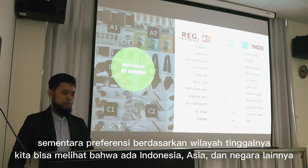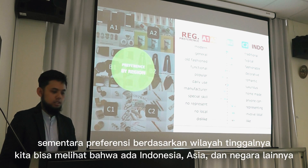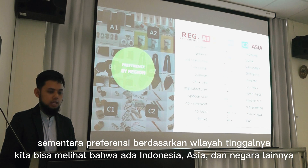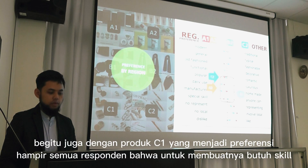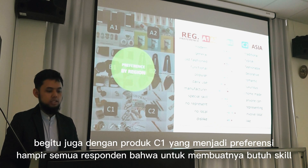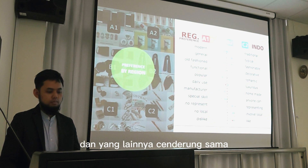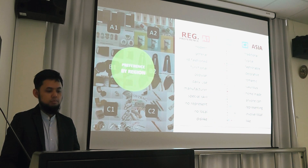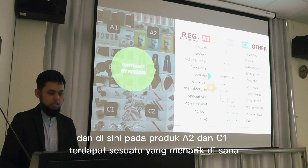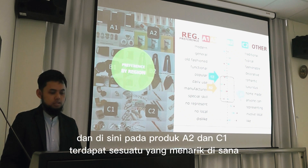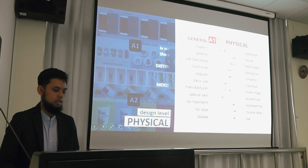From the preference by region — this is Indonesia, this is Asia, this is other countries — we can see there is an interesting finding. The others tend to have the same preference, but for C2, A2, and C1 there is something interesting. At the physical level design, we can conclude that A1 and A2 already fulfilled my purpose, because it's about distinguished identity — it's typical and it's already modern.